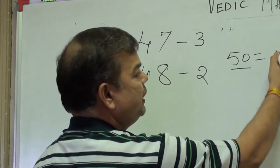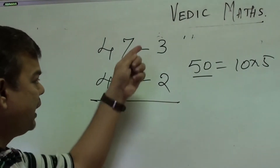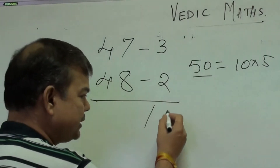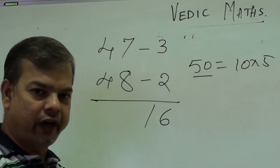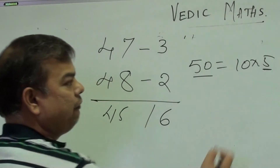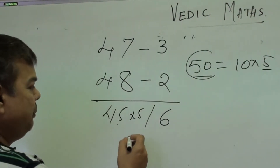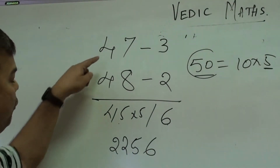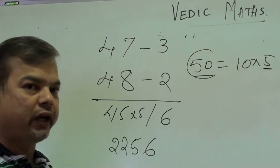With base 50, written as 10 × 5: multiply the differences (−2) × (−3) = +6. Cross addition: subtract −2 from 47 to get 45. But 45 is not the actual number — since I multiplied 10 by 5 to make base 50, I multiply 45 by 5: 5 × 5 = 25, 5 × 4 = 20 + 2 = 22. So the answer is 2256.